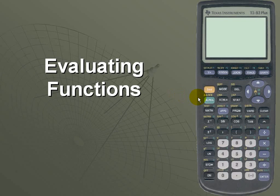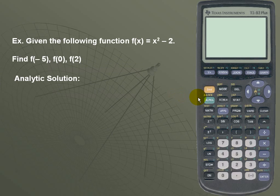Evaluate functions using the TI-83. Example, given the following function f of x equals x squared minus 2, we want to find f of negative 5, f of 0, and f of 2.